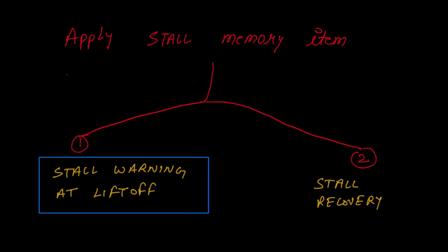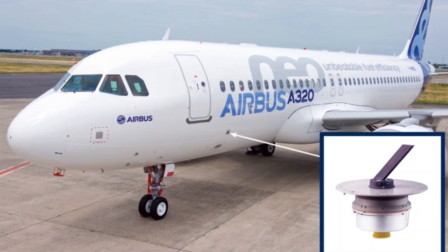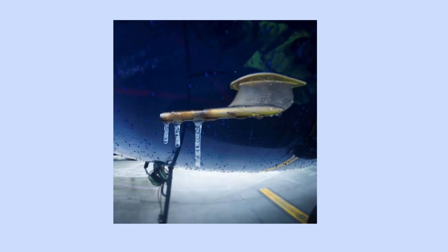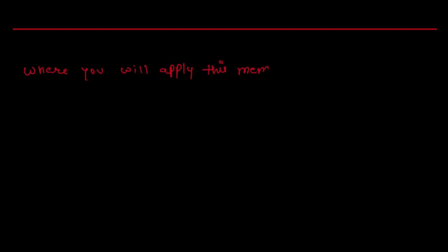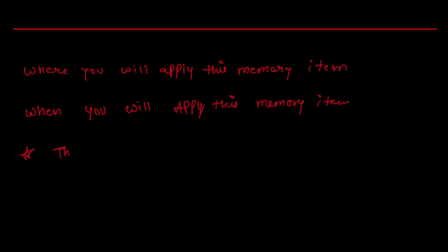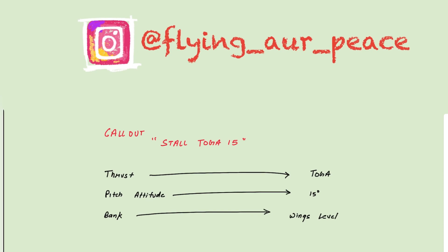There are very high chances that this stall warning during lift-off is spurious, because of many reasons: damage to the angle of attack probes, ice ridges, degrading AOA, and wake vortex. So one doubt is clear — where and when you will apply this memory item. You also now know this warning can be spurious, but even then you will apply this memory item no matter what.